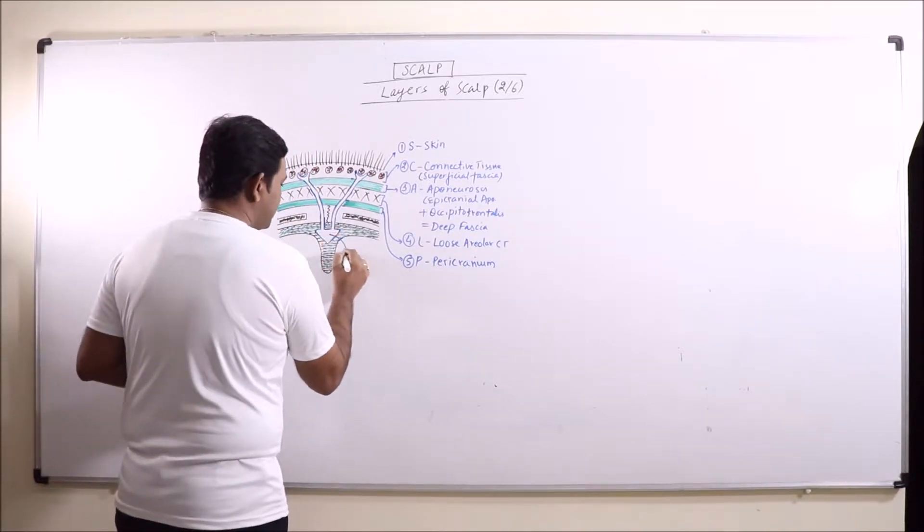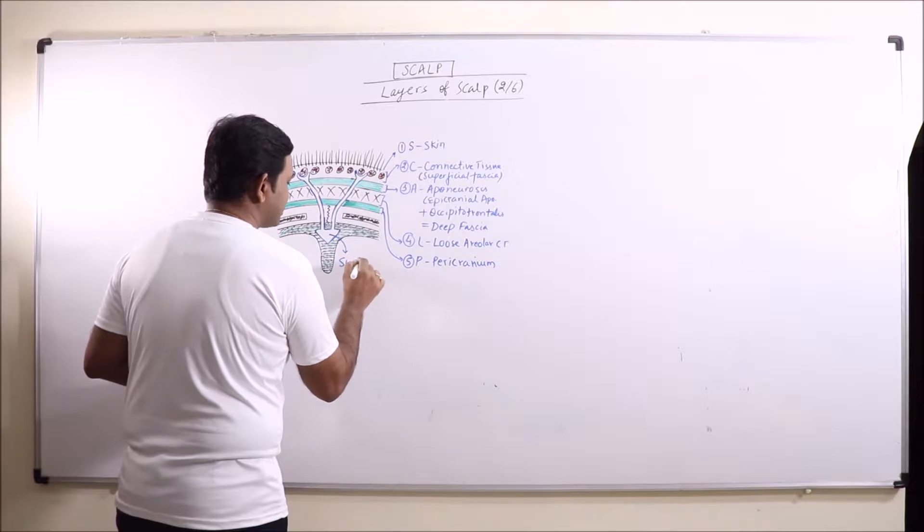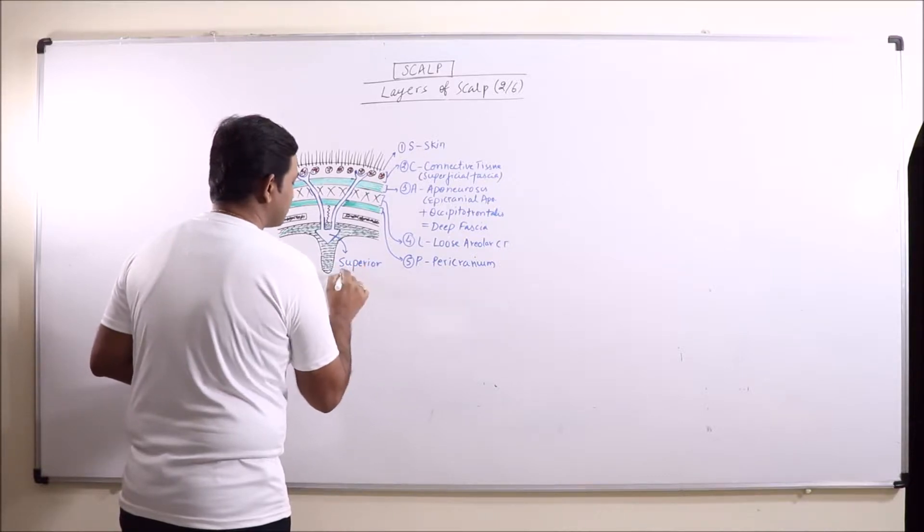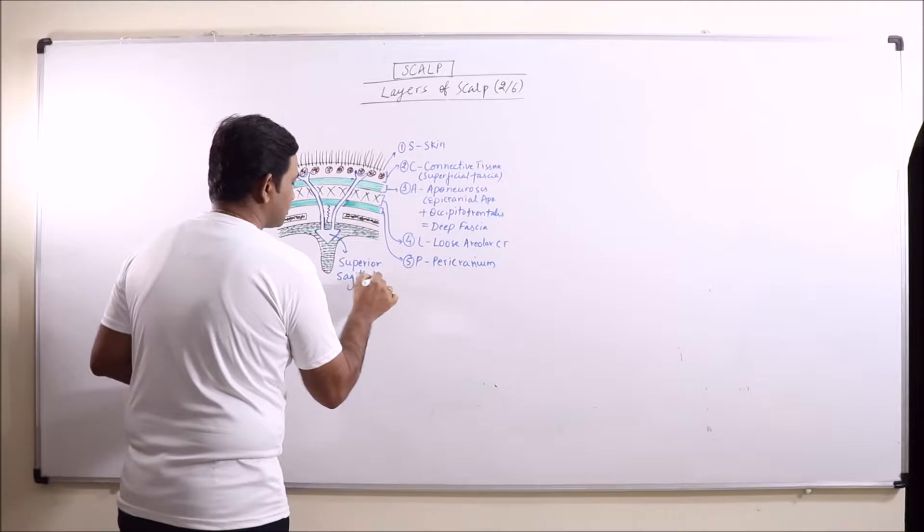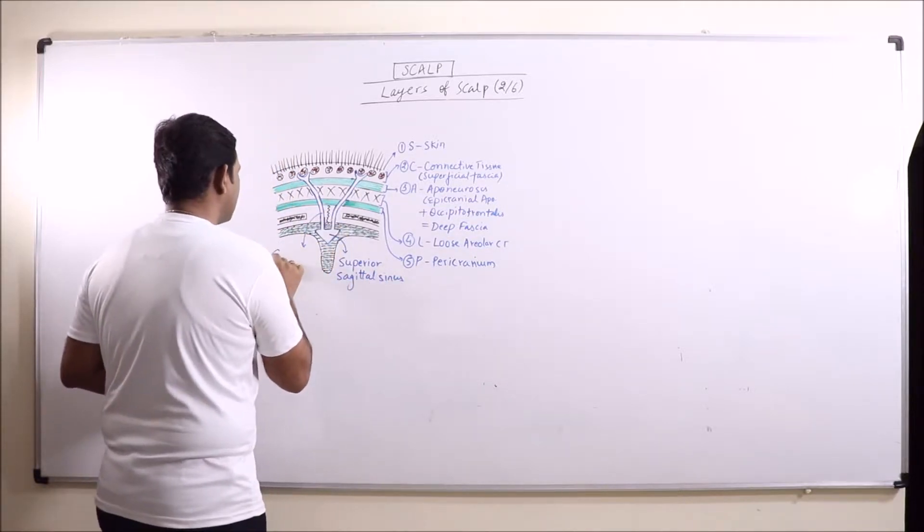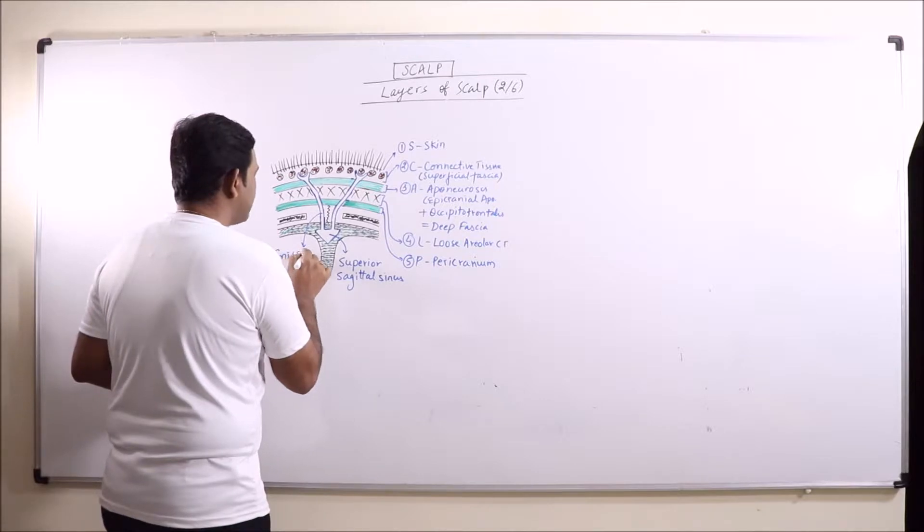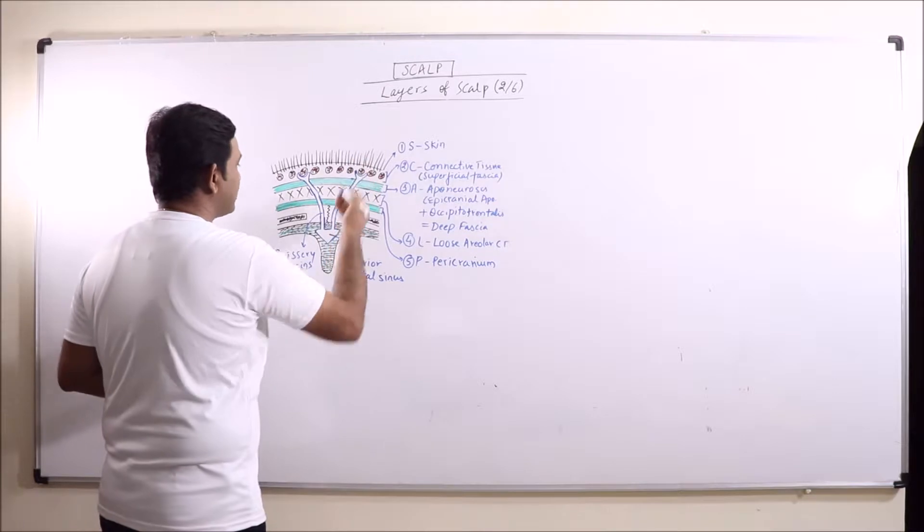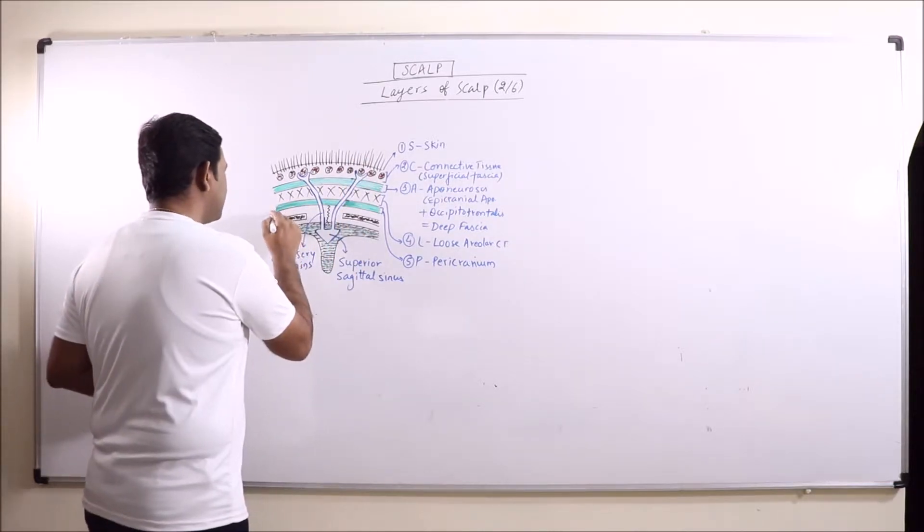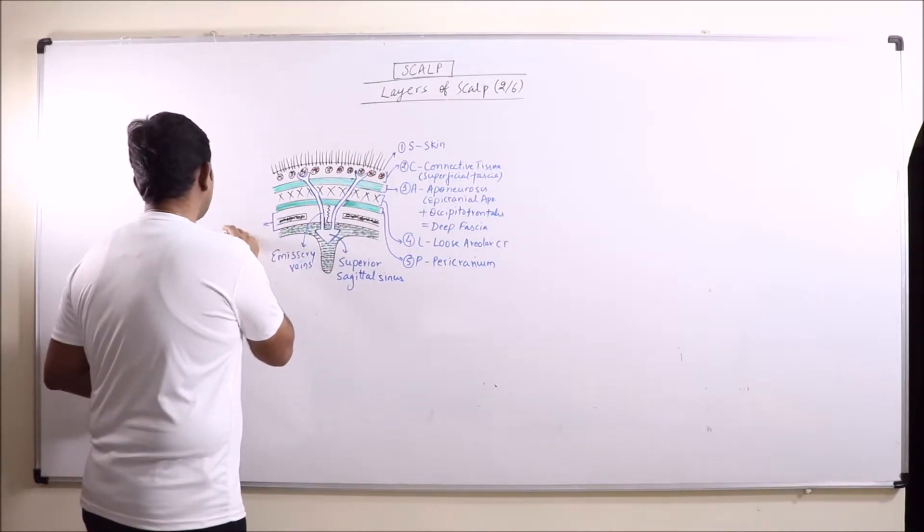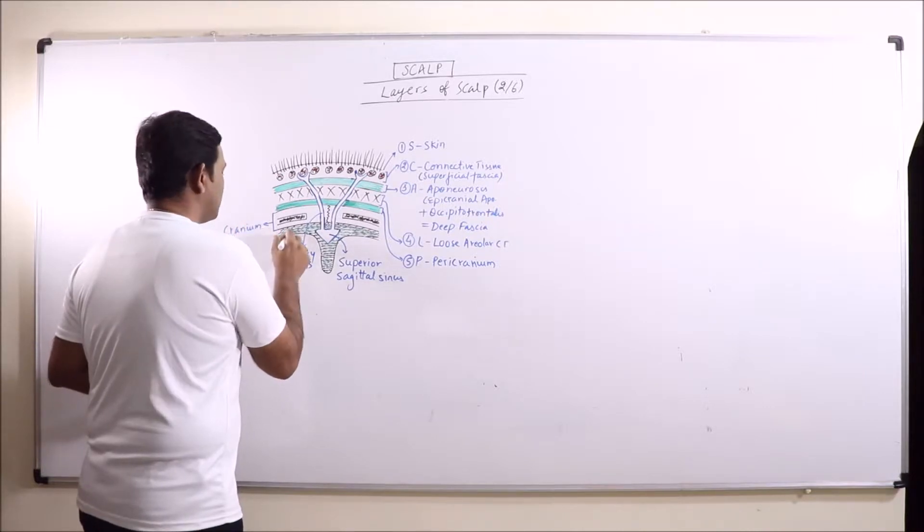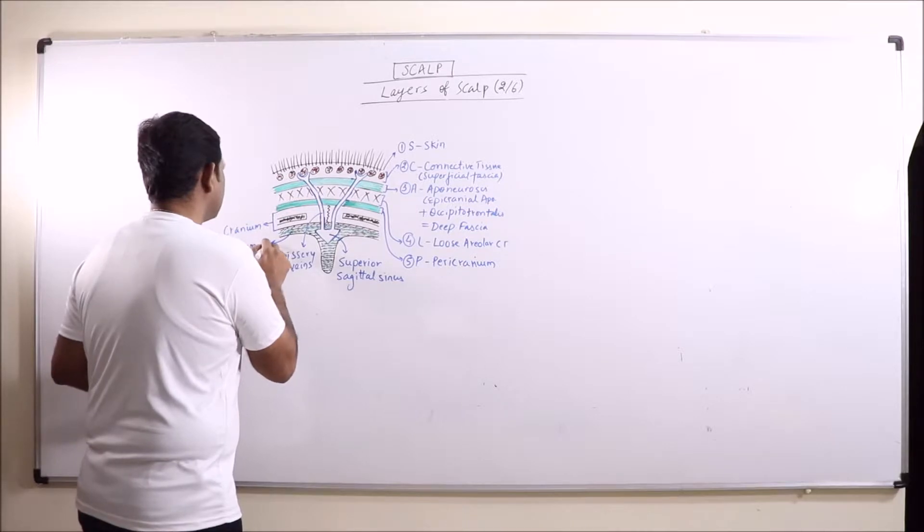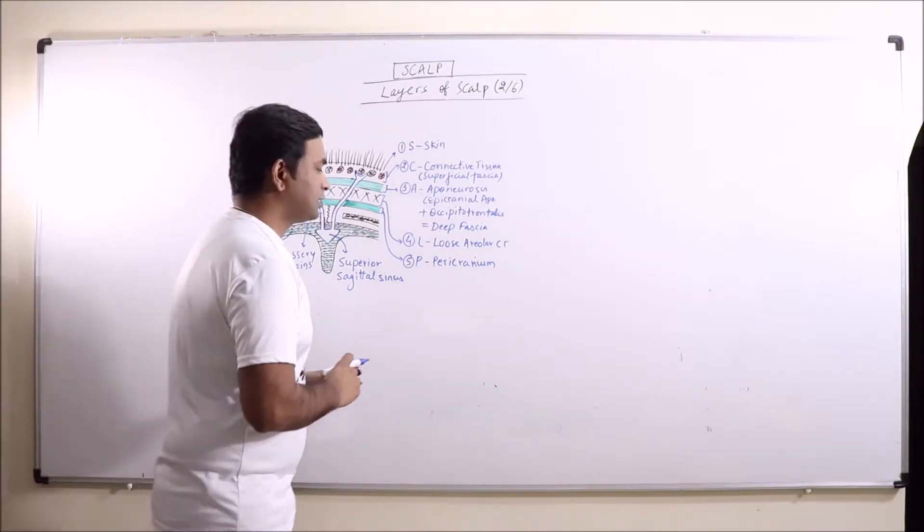Now this is basically superior sagittal sinus. And this is the structure of cranial bone. And this is of course the neurocranium. Now we will discuss the layers of scalp.